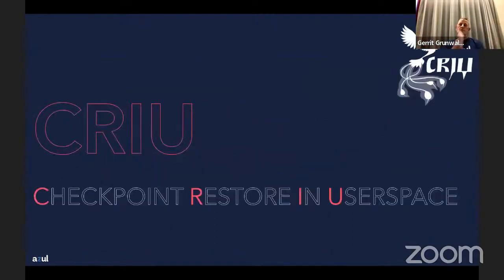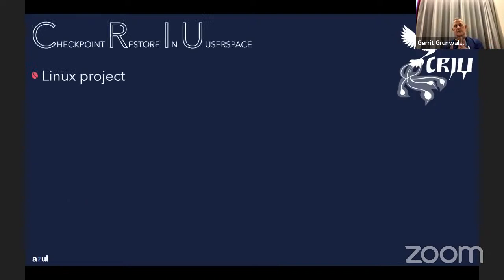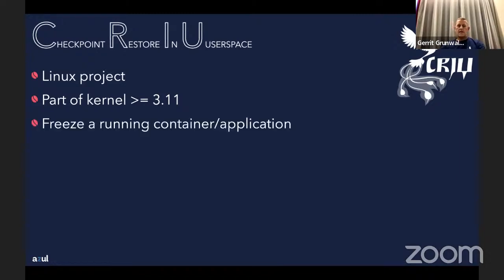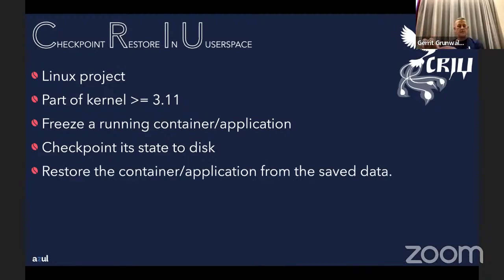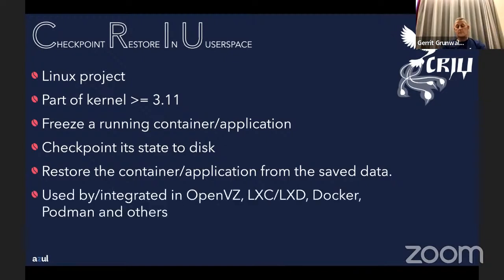What about a different approach? There's a project in the Linux world called CRIU — Checkpoint/Restore In Userspace. It's a Linux project that's been part of the kernel since version 3.11. The idea is to freeze a running container or application, checkpoint it — save the whole state to disk — and then at some point restore it back into memory so it's up and running again. It's used by OpenVZ, Linux Containers, Docker, and Podman, so it's in production.